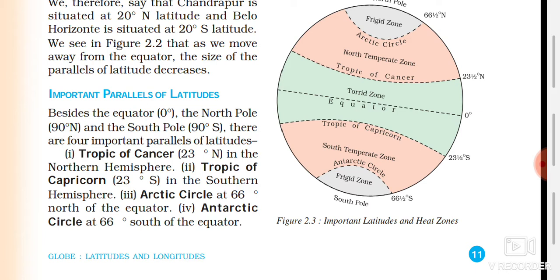The Arctic Circle is at 66.5 degrees north and the Antarctic Circle is at 66.5 degrees south. The Tropic of Cancer is at 23 degrees north, the Tropic of Capricorn is at 23 degrees south, and the equator is at zero degrees. Remember these: equator at 0°, Tropic of Cancer at 23°N, Tropic of Capricorn at 23°S, Arctic Circle at 66°N, Antarctic Circle at 66°S.